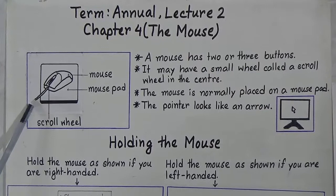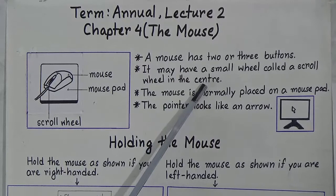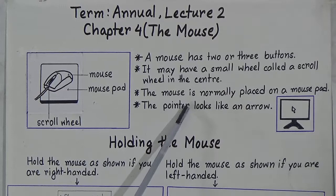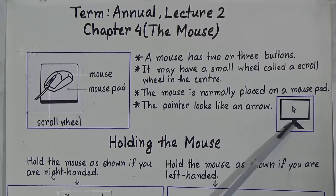So a mouse has two or three small buttons and we can also find a small wheel called a scroll wheel. The mouse is placed on a mouse pad. When we move the mouse on the mouse pad, the pointer moves on the monitor screen and the pointer looks like an arrow.